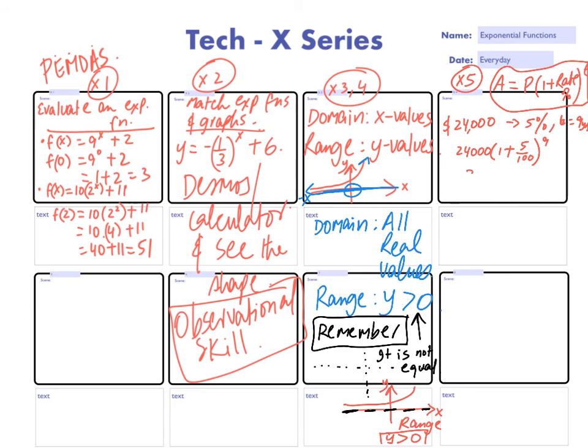So we get 37,231.87. Now if they ask you to round it off to the nearest cent, we'll put 37,231.87. And we'll get our answer.